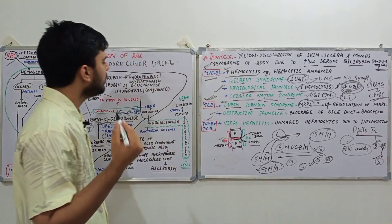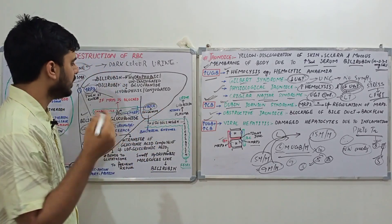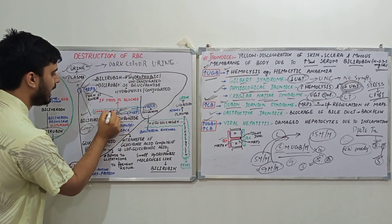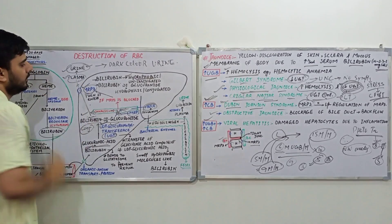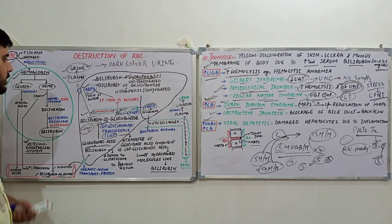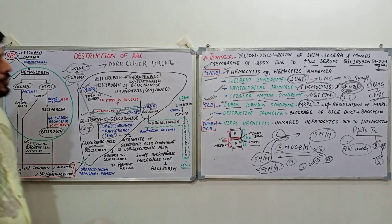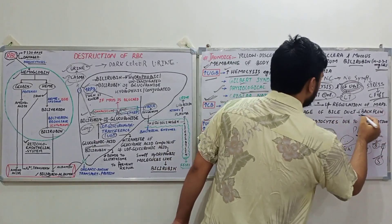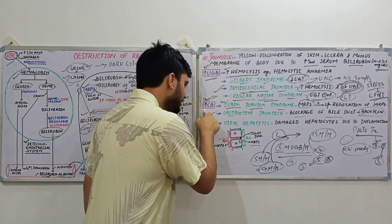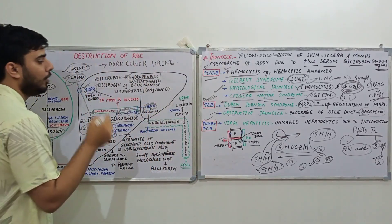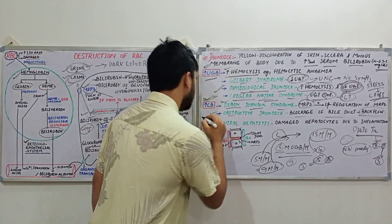The next cause is obstructive jaundice, for example due to gallstones or another condition causing obstruction of the bile duct. This obstruction causes back-flow of bilirubin diglucuronide, which is then exported from the liver into the plasma via MRP3 proteins. In obstructive jaundice, we also see bile and cholesterol appearing in the blood plasma, since bile contains cholesterol.